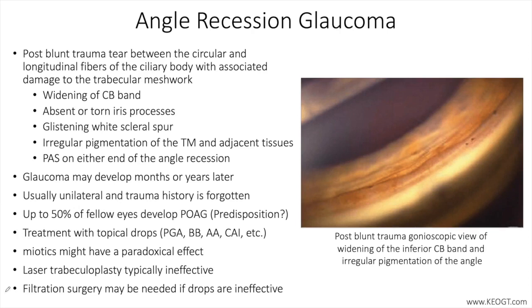The differential diagnosis of angle recession glaucoma centers on appropriate history and identification of a history of blunt trauma. Unfortunately, many patients do not recall past trauma, and examination is often needed to exclude other disease entities that can also present with unilateral elevation of intraocular pressure, such as pseudoexfoliation, pigmentary glaucoma, ICE syndrome, post-surgical trauma, and other rare entities such as carotid cavernous fistulas.